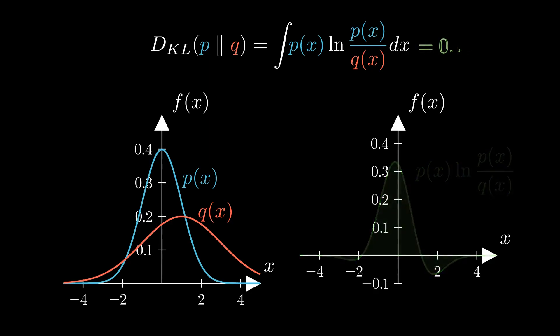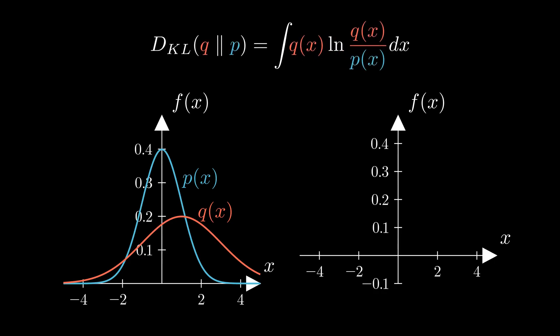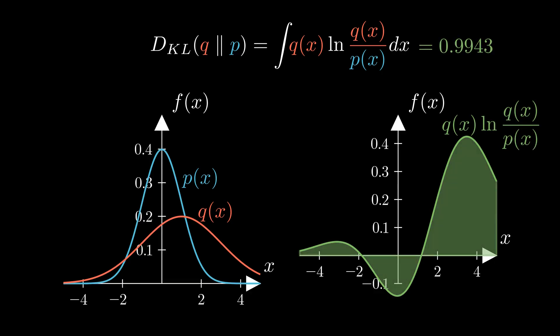One important property to immediately notice is that this distance is non-symmetrical. In other words, if we swap P and Q in the formula, the resulting function will look very different and the KL divergence value will not be the same. How does one make sense of it and where does this function come from?